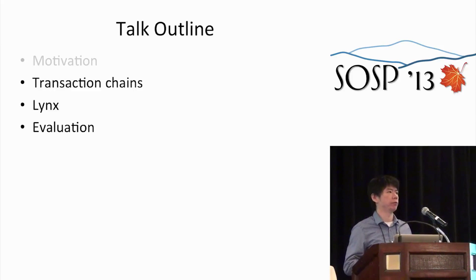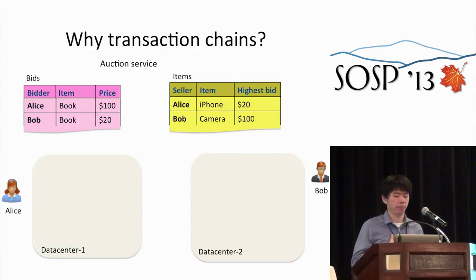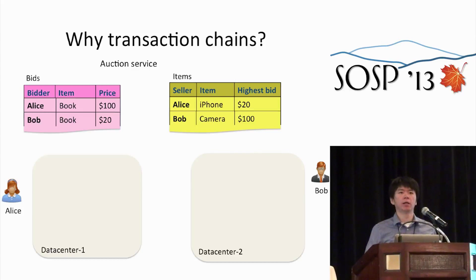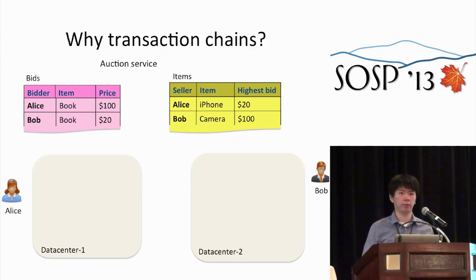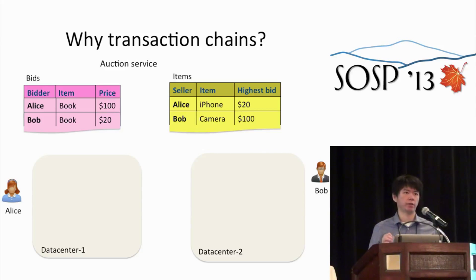To motivate why we need transaction chains, let's look at an auction service example. In this application, we have two tables: the bids table and the item table. The bids table has three columns — bidder information, the item being bid on, and the price of that bid. For the item table, we have the seller information, the item being sold, and the currently highest price on that item.